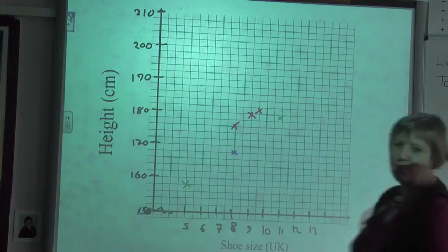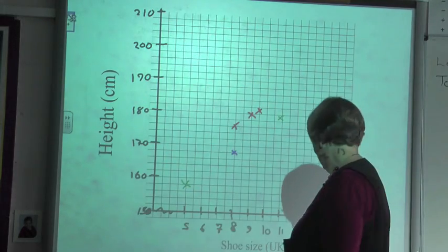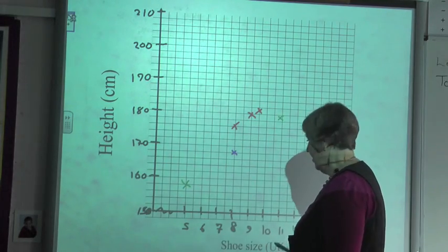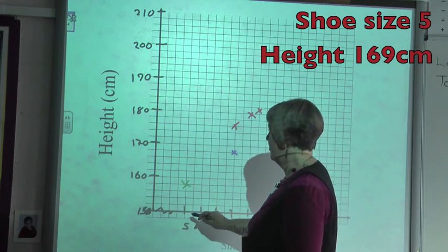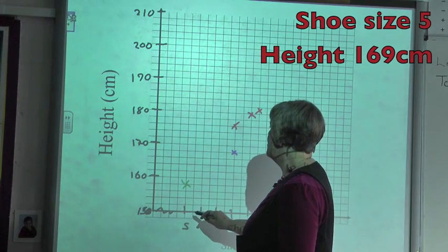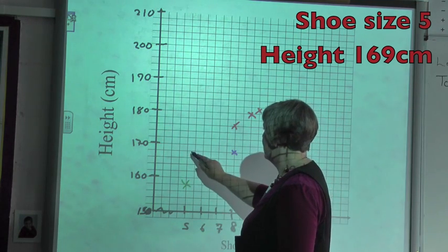Hi, I am Brenna Stokes. Shoe size is 5, height 169cm.